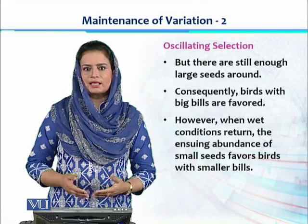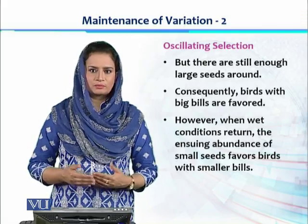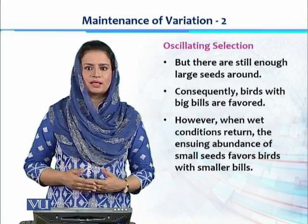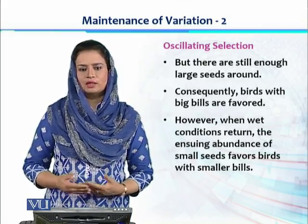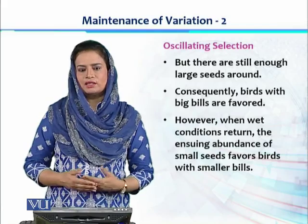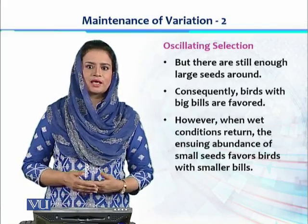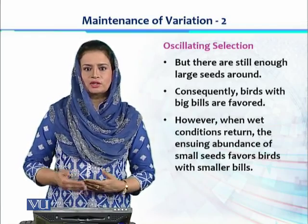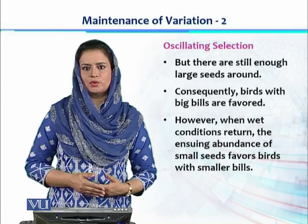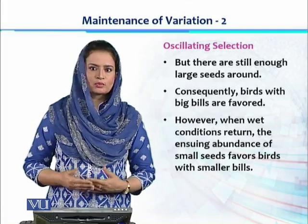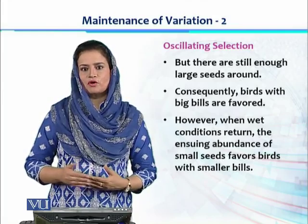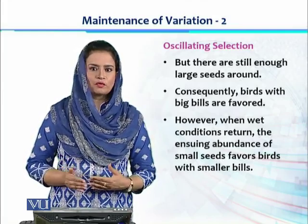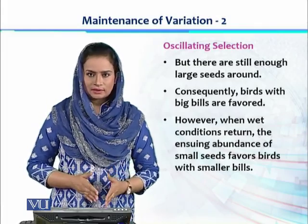So beak size is a trait with two different variations — small beak and large beak — which are different alleles favored by natural selection but in different seasons. The dry season supports large beak and the wet season supports small beak. That is how the favor of natural selection is oscillating, moving between one allele and the other.